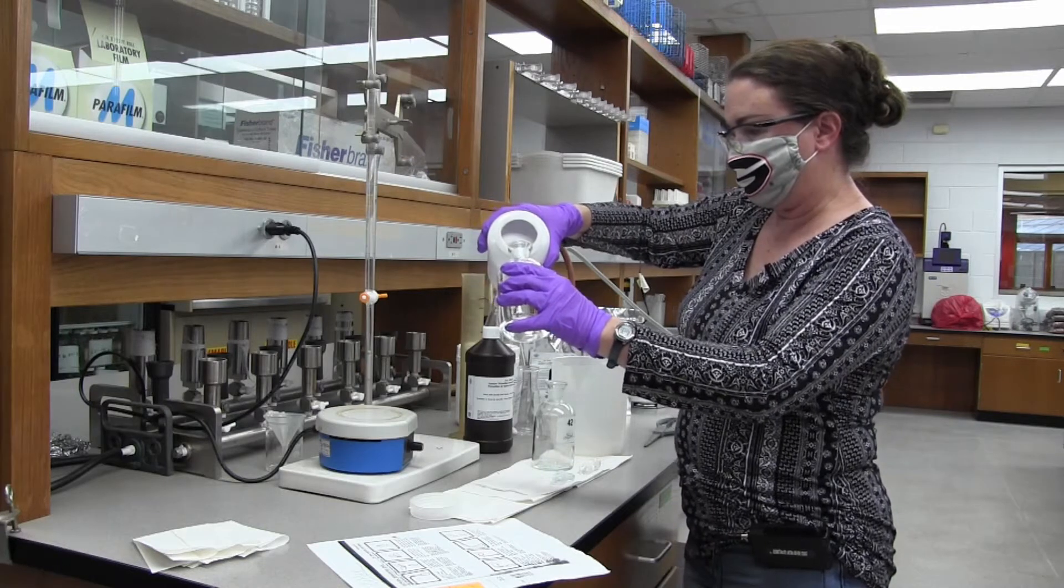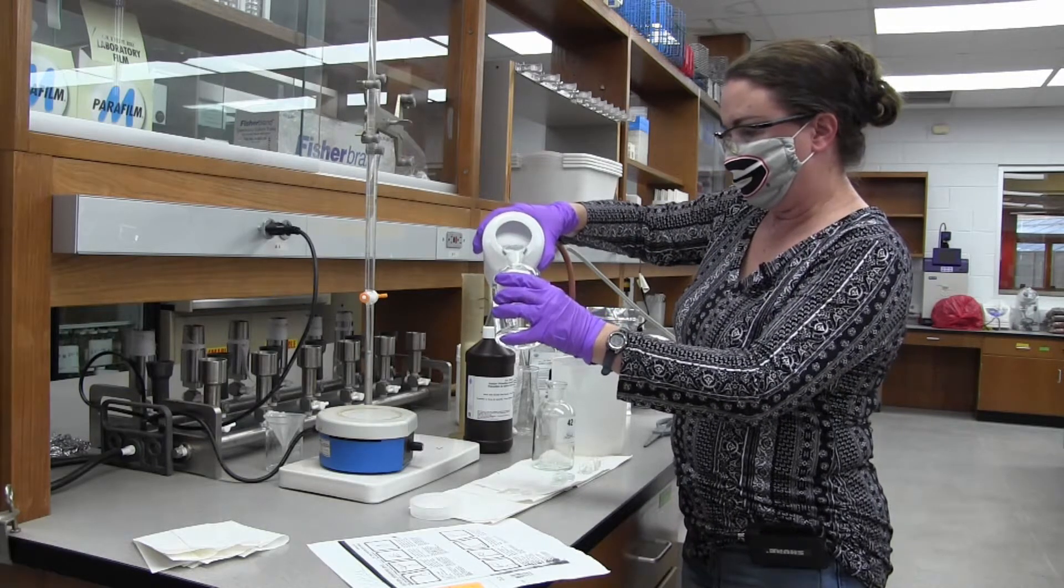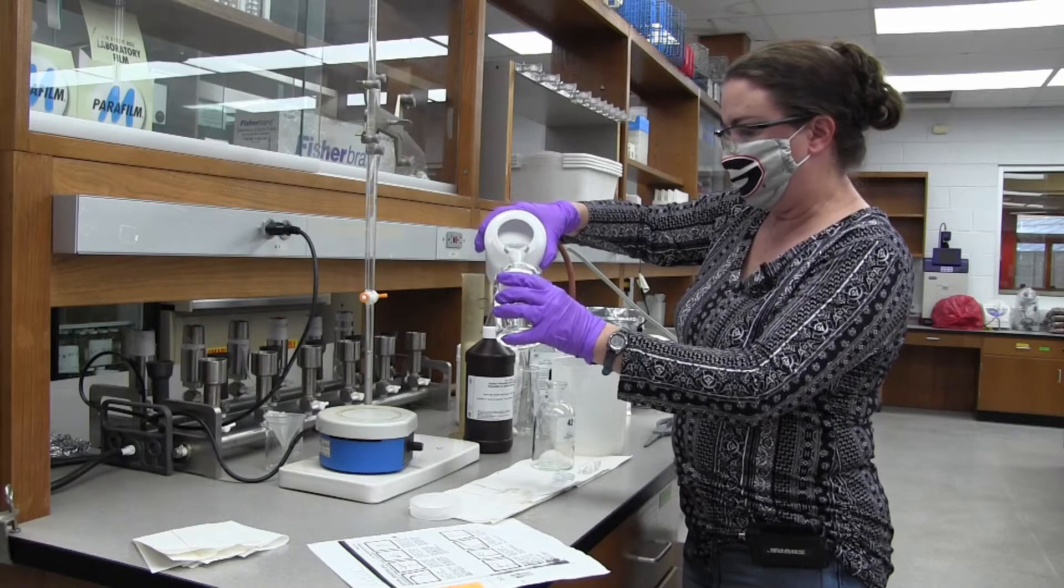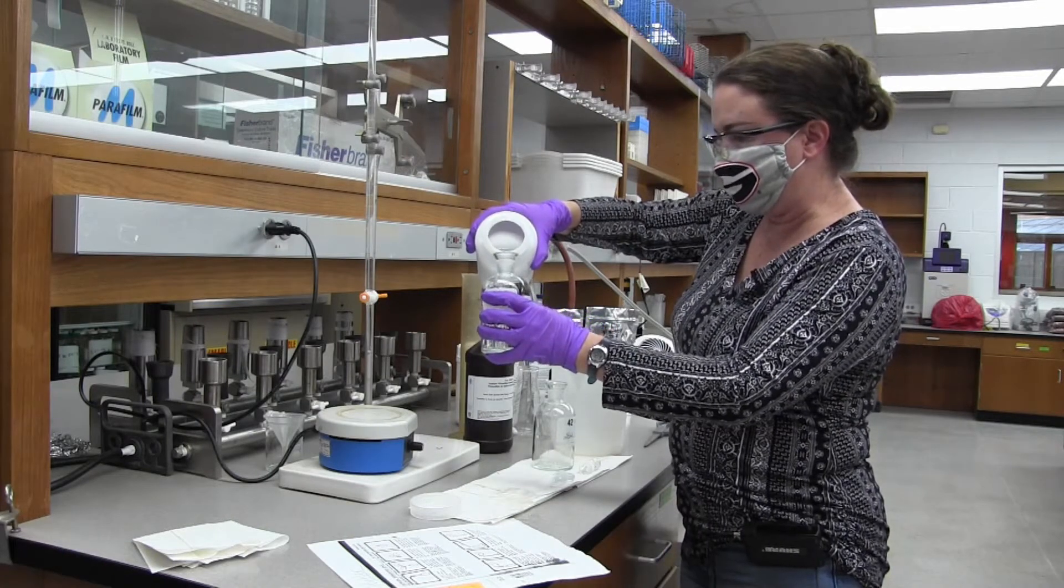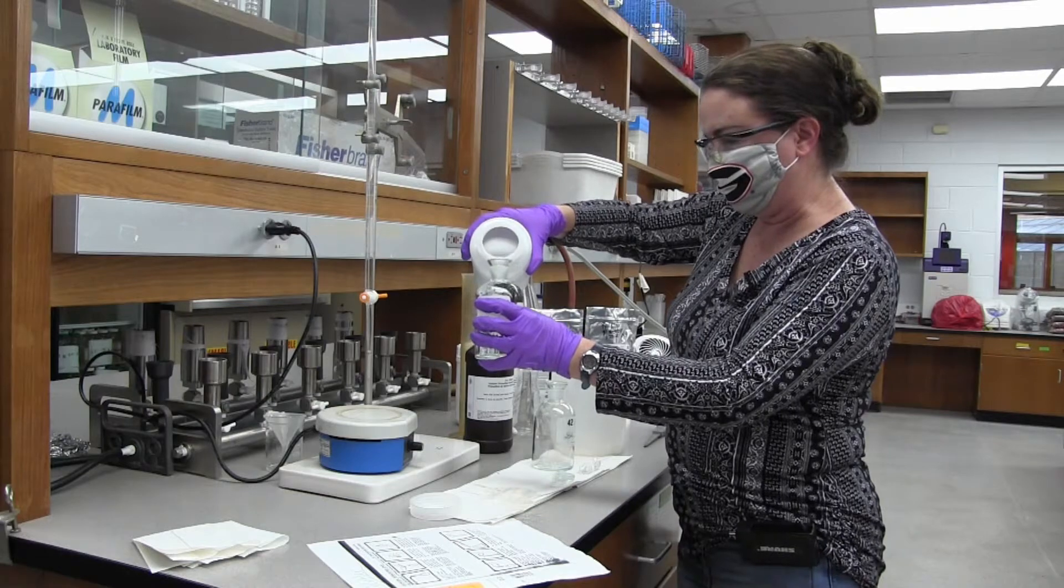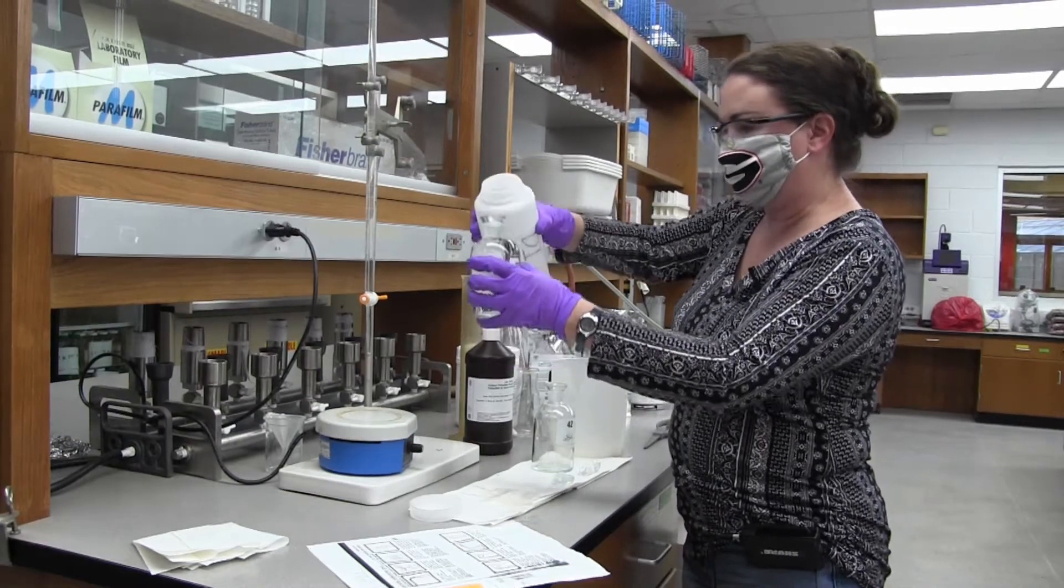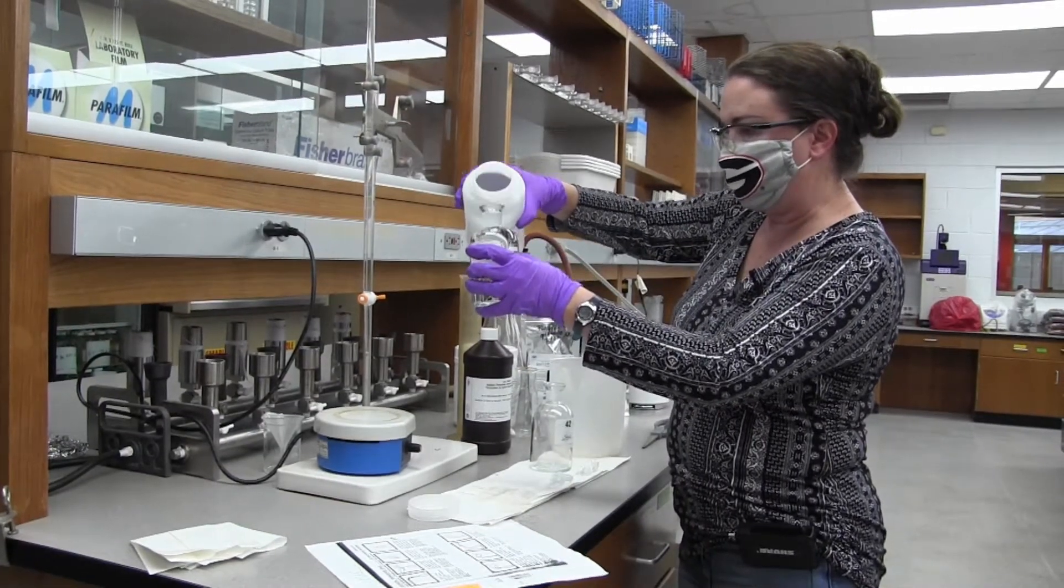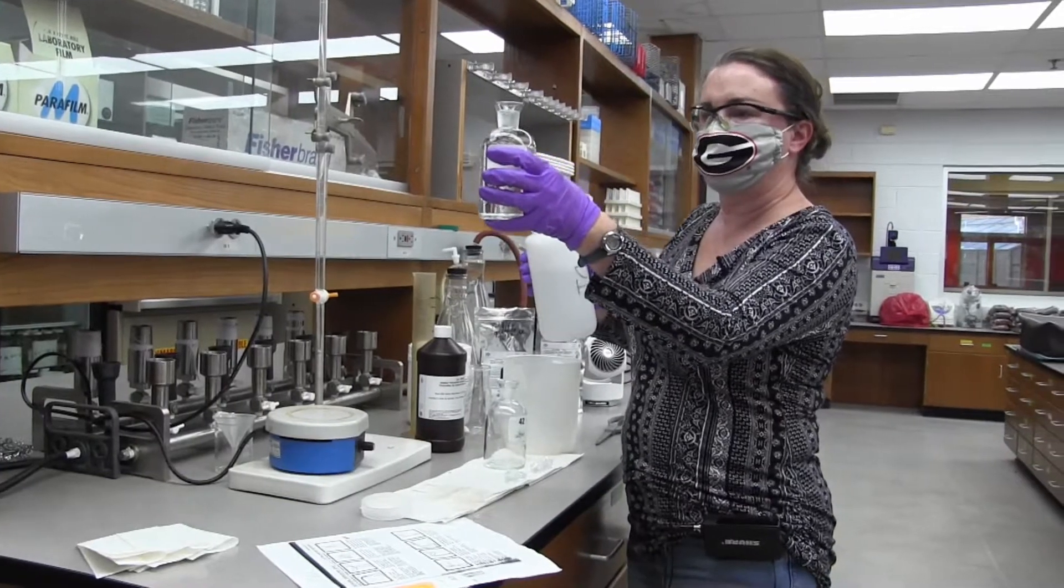Just slowly pour. And it might be a good idea to have some paper towels on hand because this gets messy. I usually pour it to the top of the frosted area if you're using a glass BOD bottle.